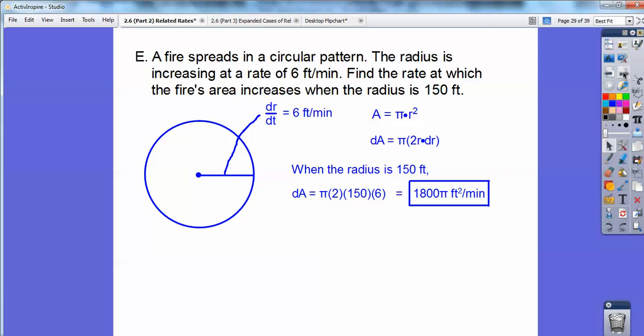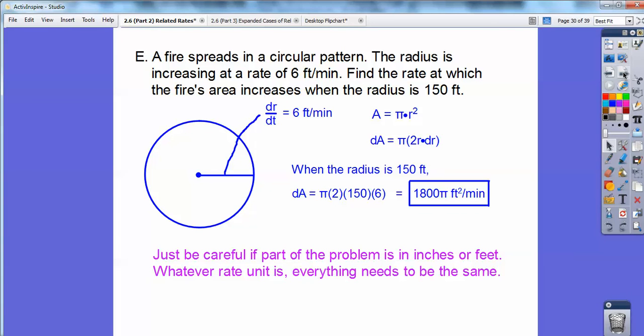And I get 1,800 pi feet squared per minute. And since it's an area, area is always square units. It's volume is always cubic units. And everything else is always just units. So make sure you put your problem into context.